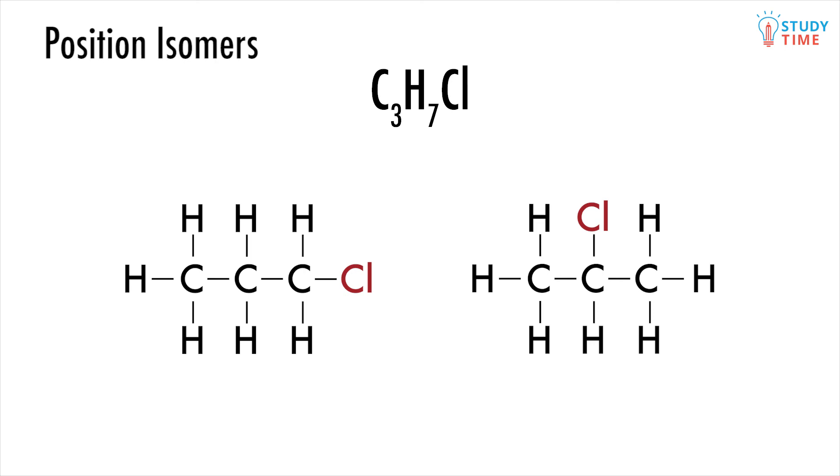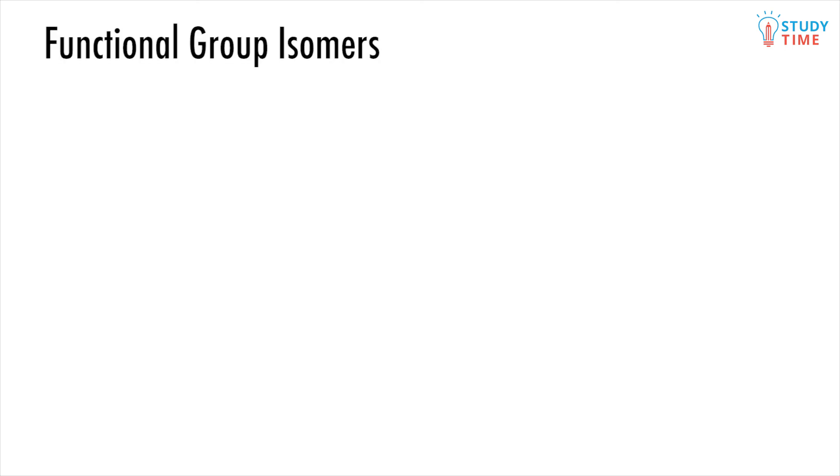The final kind of structural isomerism is functional group isomerism. This is when the functional group itself has changed, rather than just changing position. Consider C3H4. A quick look will show you that the functional groups of this must be double or triple bonds, since there aren't enough hydrogens to distribute over an alkane.